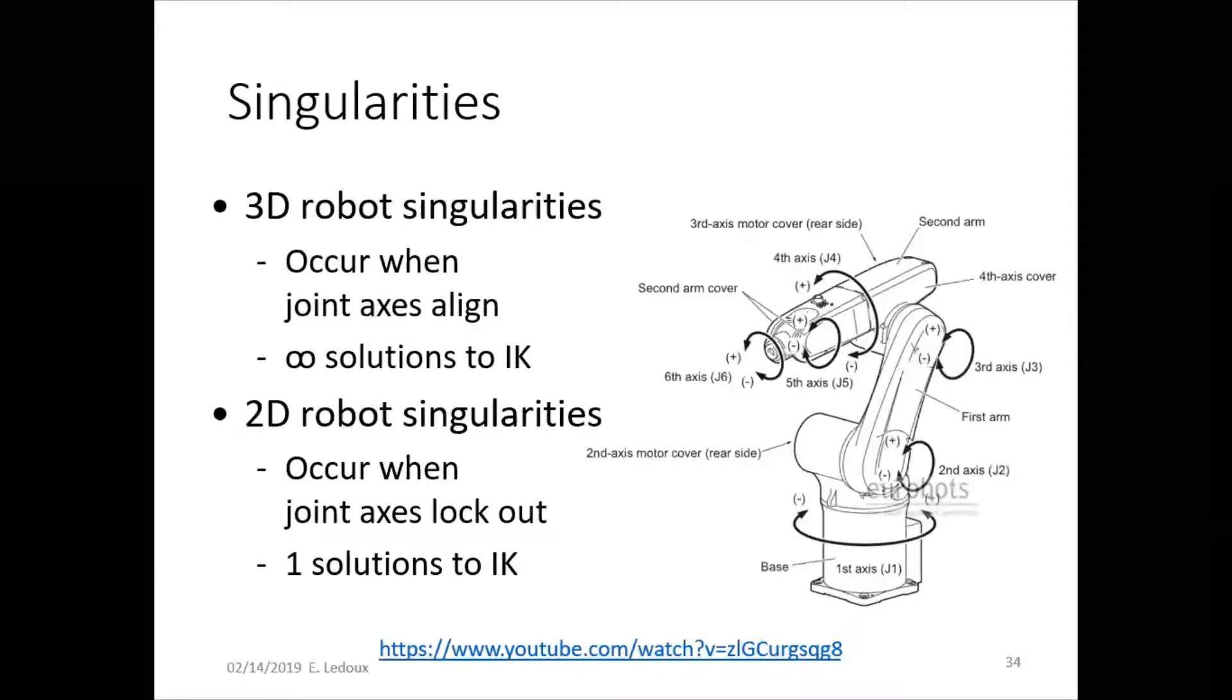In three dimensions, singularities occur when the joint axes align, and there's infinity solutions to the inverse kinematics problem. So in this six-axis robot shown, if axis one, axis four, and or axis six all line up, it'll be a singularity. Click on the link to see the video.